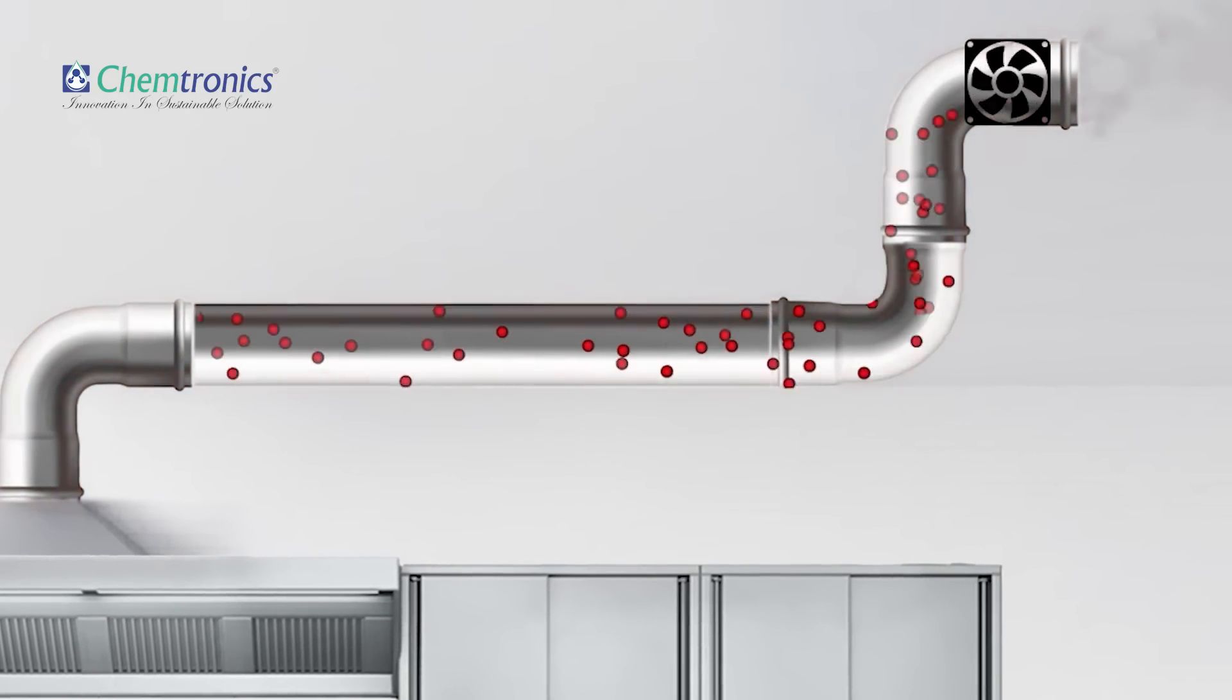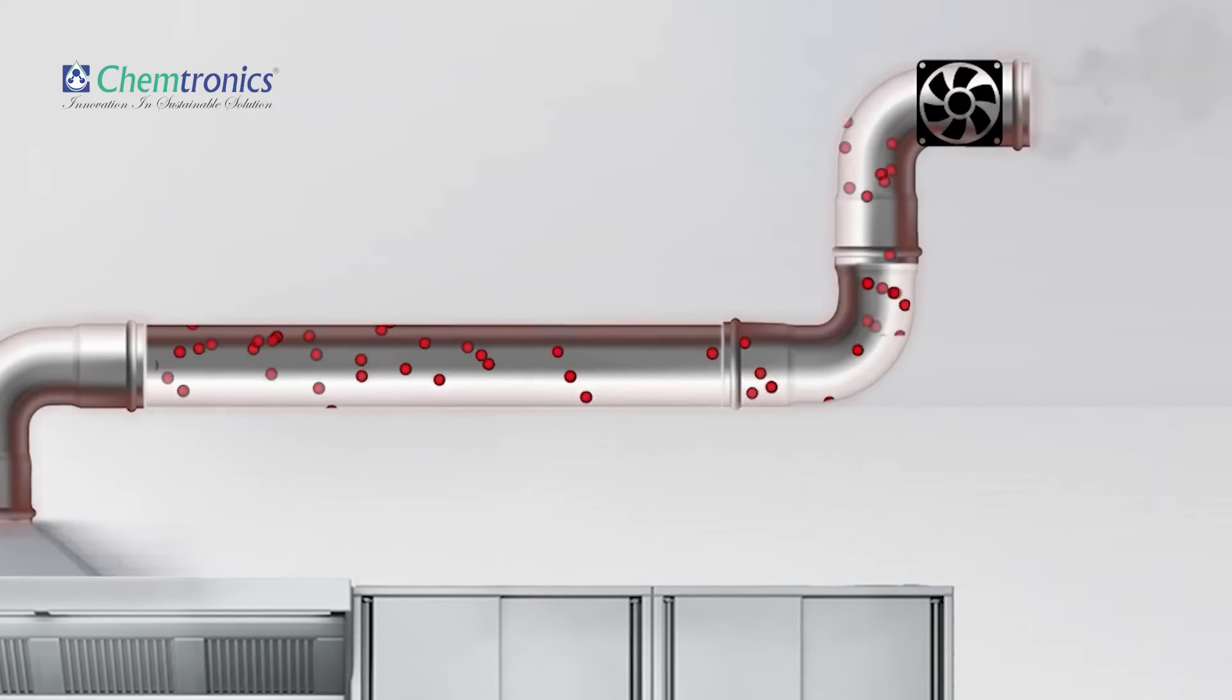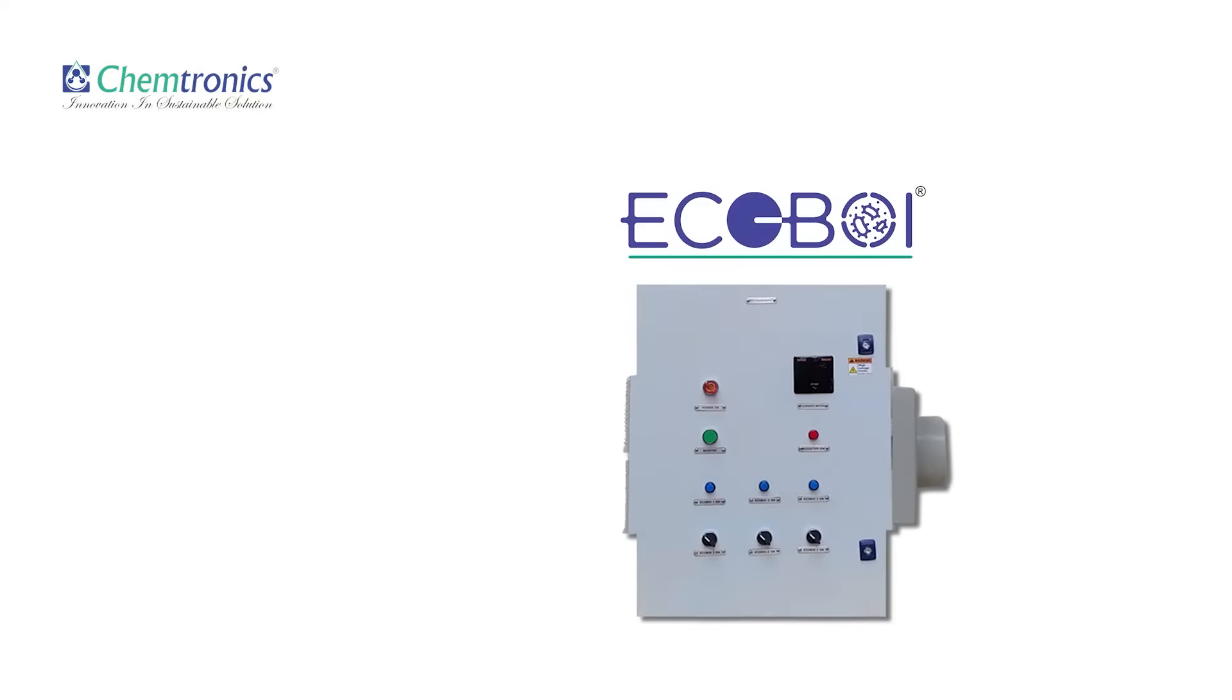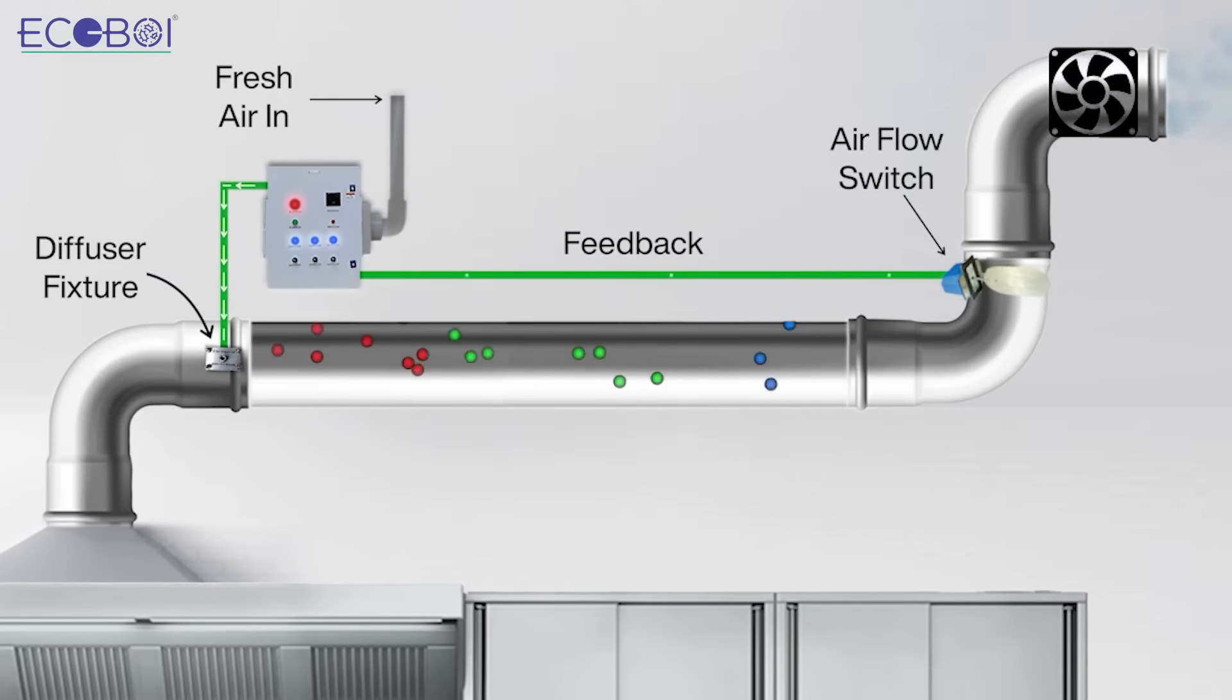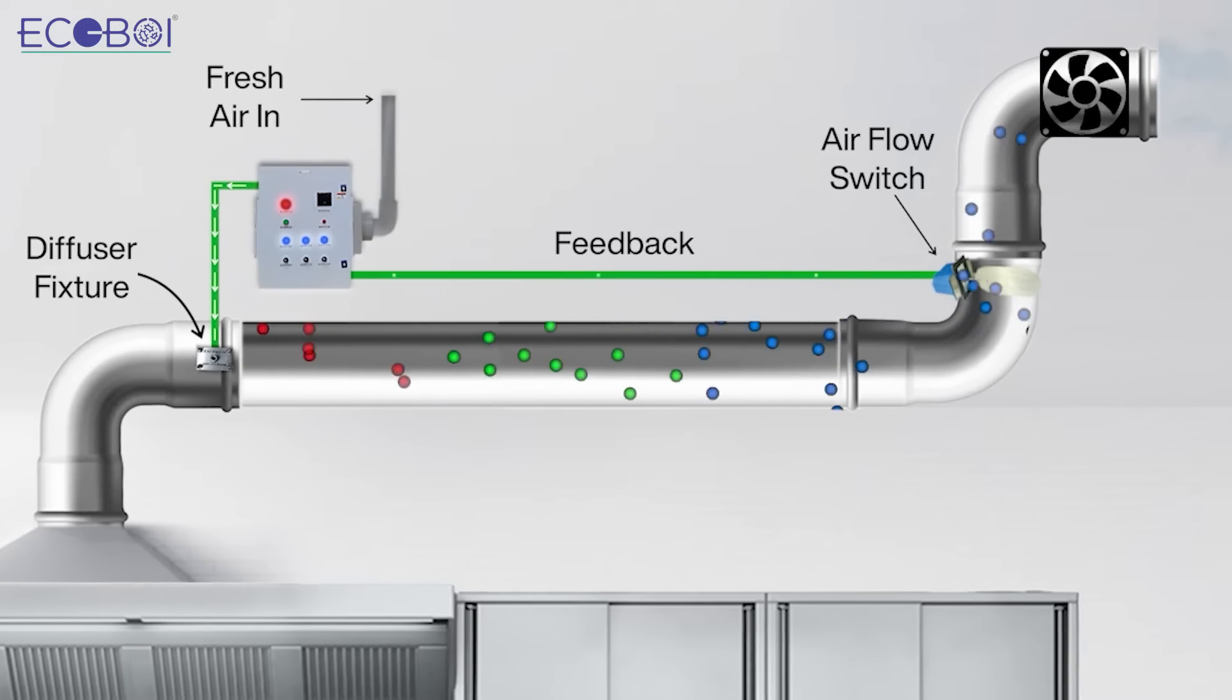By installing Chemtronics Ecoboy generator, get rid of oil, grease, and odor. The flexible tube carrying the oxidizer from Ecoboy is connected strategically to the exhaust duct using a diffuser fixture.